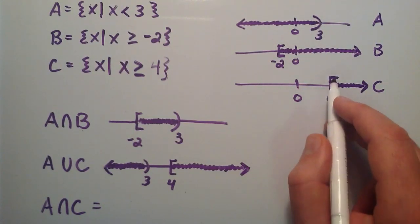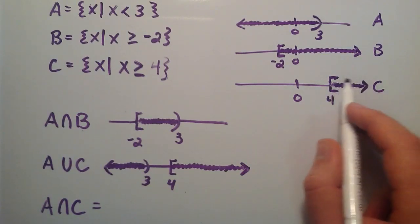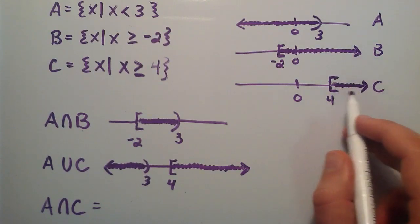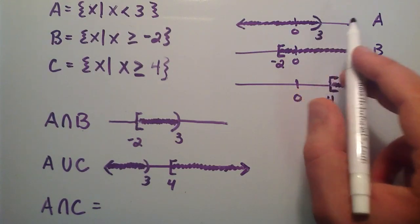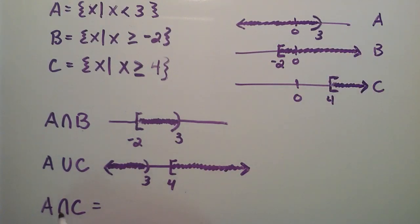Since the numbers in C are not included in A, and the numbers in A are not included in set C, then A intersect C is simply the empty set, or the null set. We can just define that by a 0 with a slash through it.